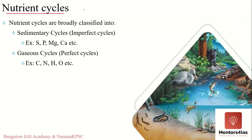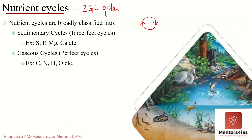In many books, nutrient cycling and biogeochemical cycling are used synonymously. However, biogeochemical cycling is actually a broader concept that includes other cycles like rock cycles, which do not have a direct bearing on life. For our purposes, we will consider nutrient and biogeochemical cycles to be synonymous. One important point to remember: nutrient cycles are generally closed loops or closed circuits.